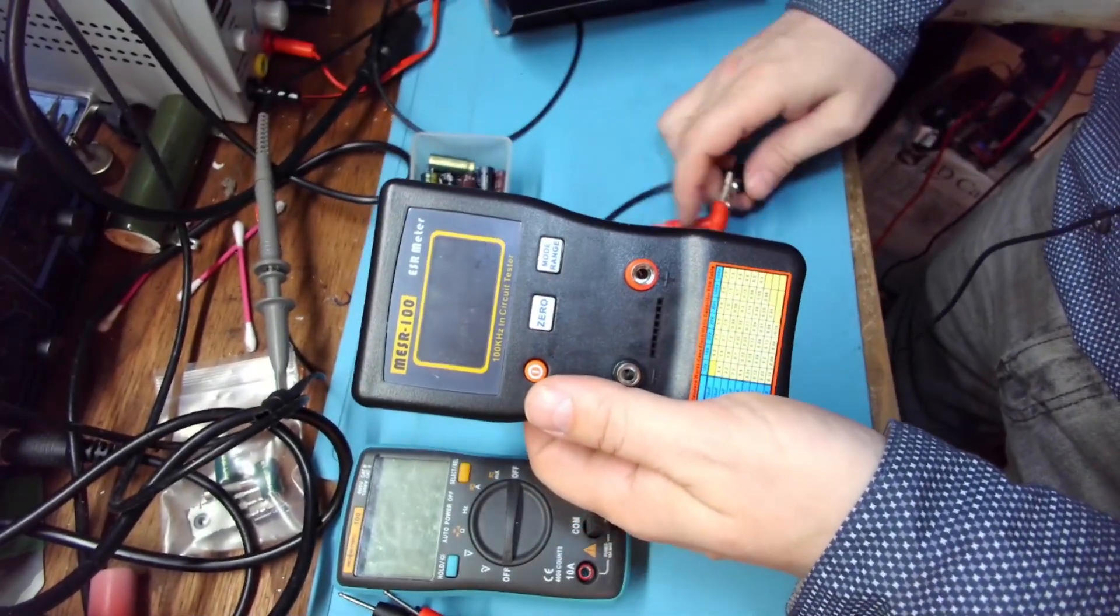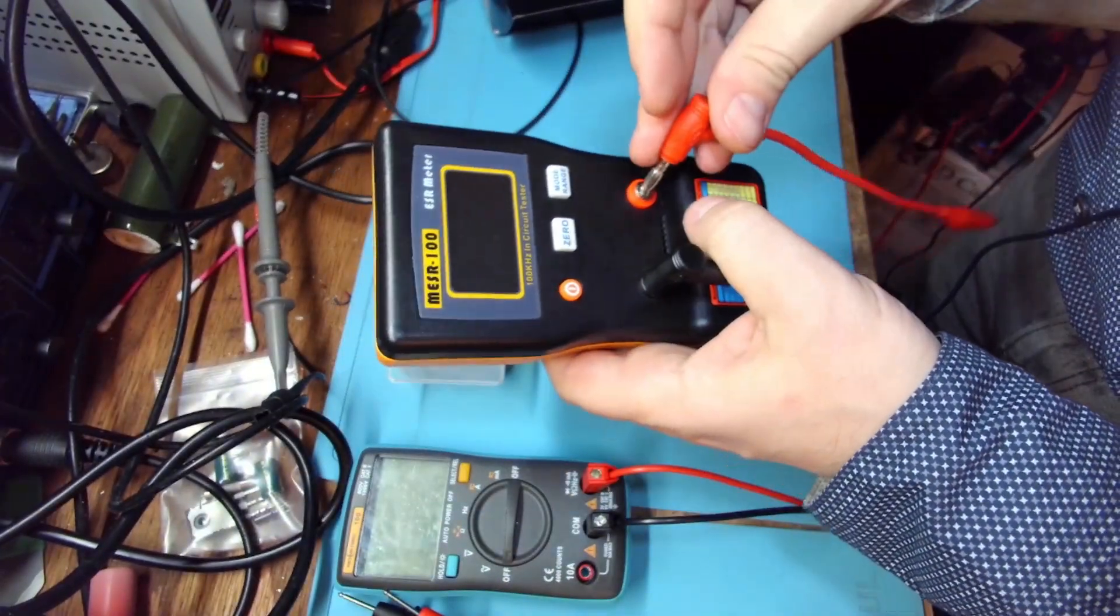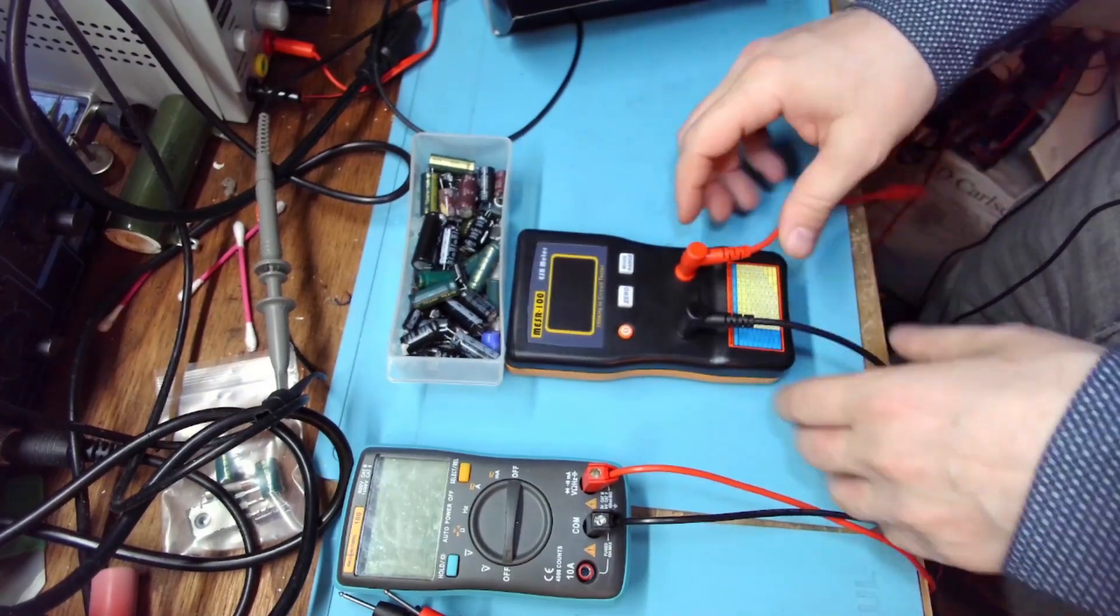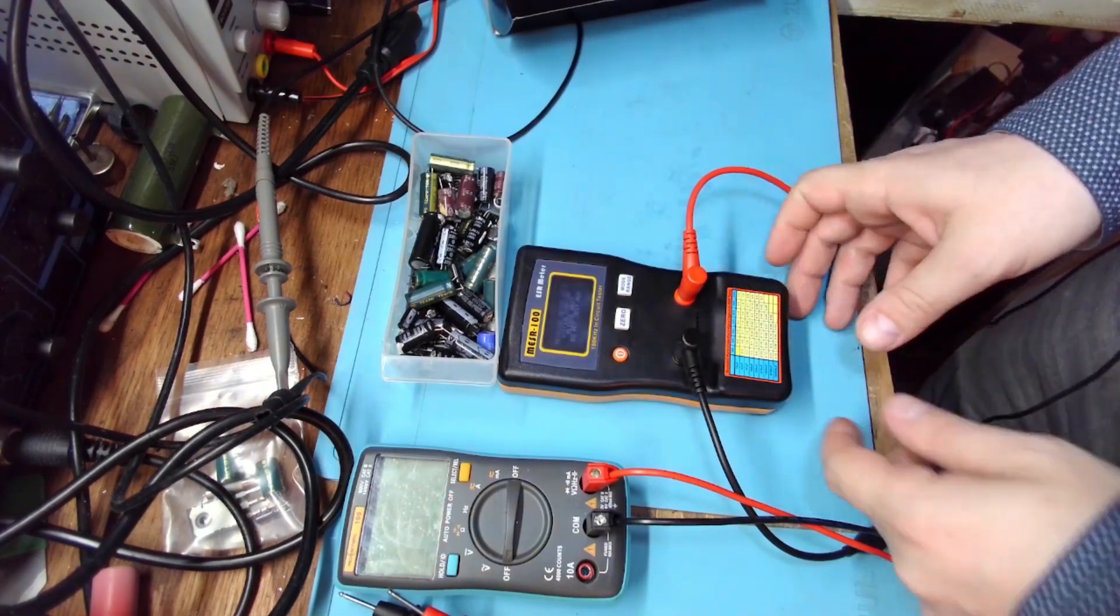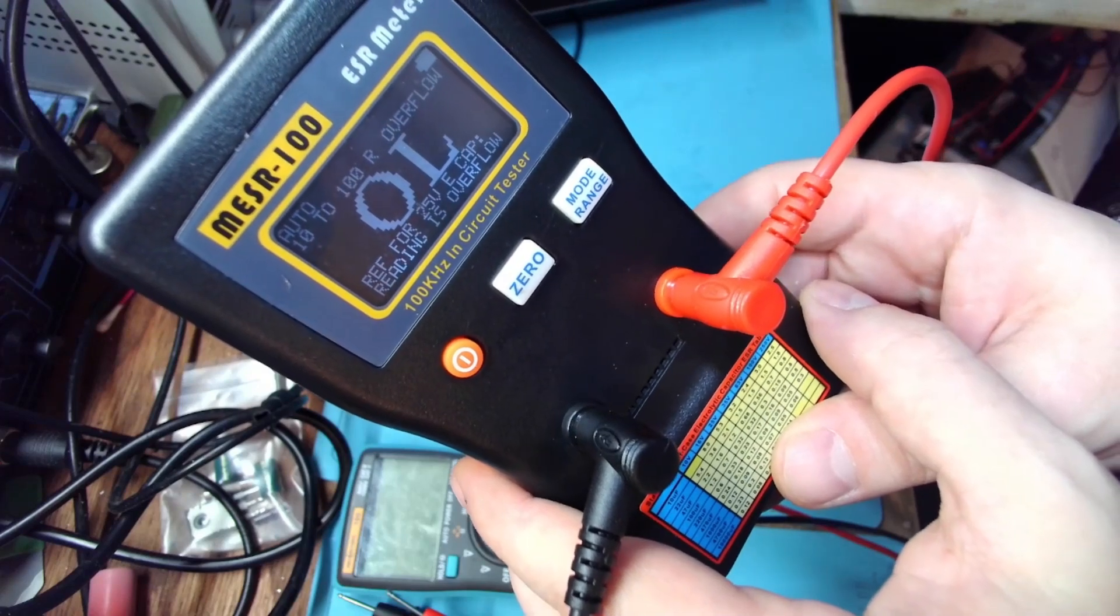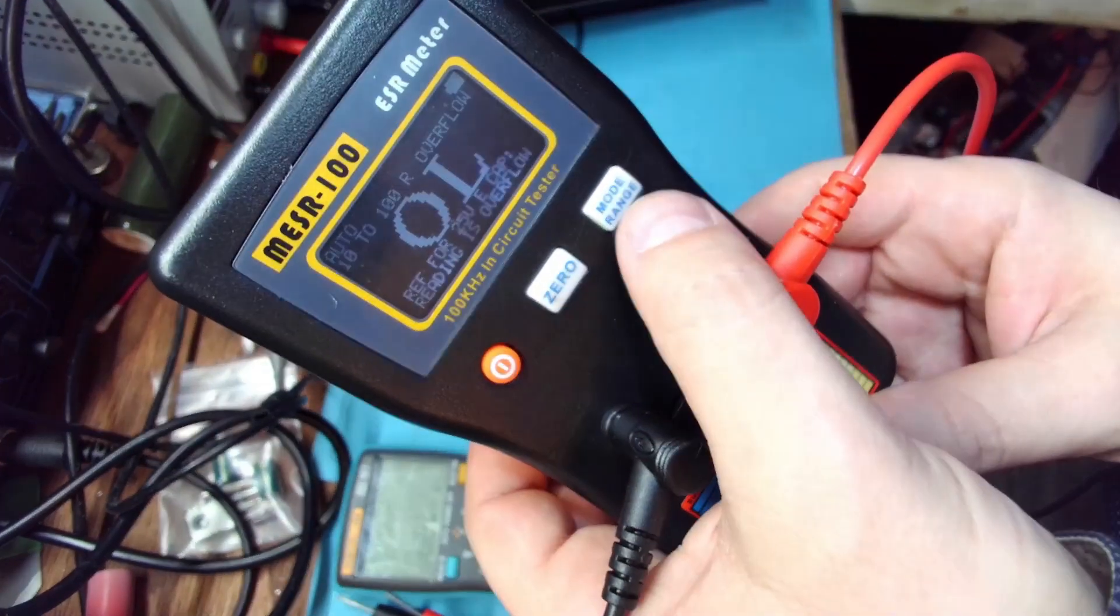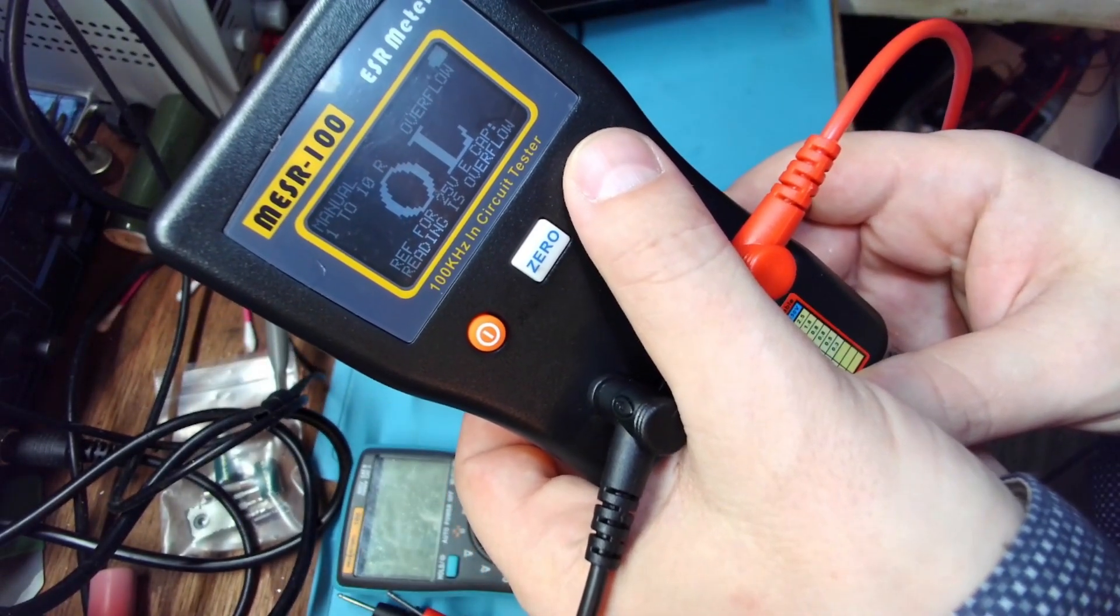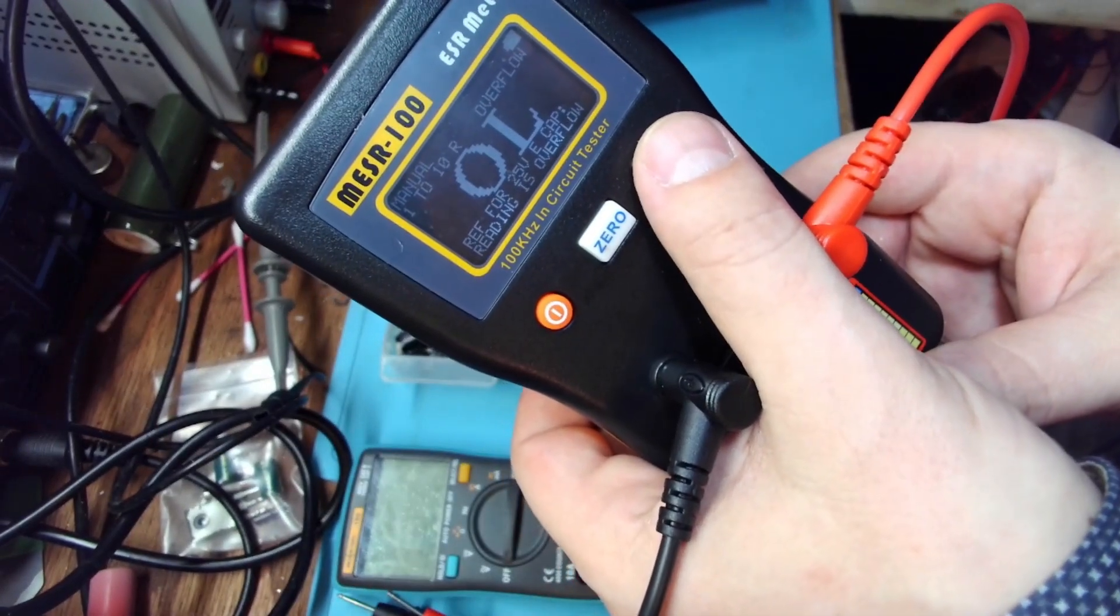It just has two holes for banana plugs and three buttons, so that should be easy. Let's turn it on. This is what it says: open line 10 to 100 ohms, and you can switch the range from 0 to 1, from 1 to 10, and from 10 to 100. I'm going to need the 1 to 10 for these caps.